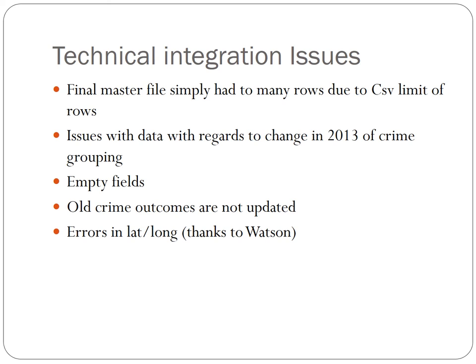There were problems with empty fields, as a lot of the data had empty fields such as crime ID and the last outcome category. Also, all crime outcomes were not updated. This posed a particular problem as it eliminated the chance of asking questions such as: out of all of the crimes, how many have been solved and how many have not — in cases of not finding or being unable to prosecute the perpetrator. With so many fields missing values, that question simply cannot be asked, as it would not represent the whole crime area and would not be factual. There were also some errors in latitude and longitude which I would not have otherwise noticed unless Watson had pointed them out to me. There were quite a few outliers simply outside of the area of jurisdiction without any indication in the data that they were outside of jurisdiction — quite a bizarre issue.